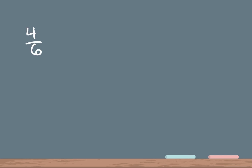Our second problem is gonna be 4 over 6 minus 1 over 3. Again, our first step is to make sure that we have a common denominator — the same number on the bottom. If you don't recognize the least common multiple right away, that's fine — we just write out our multiples to find a common denominator.